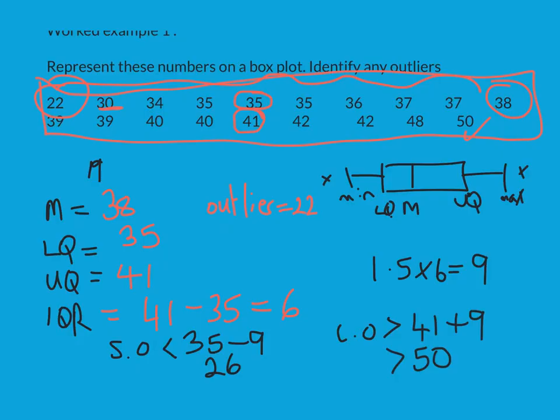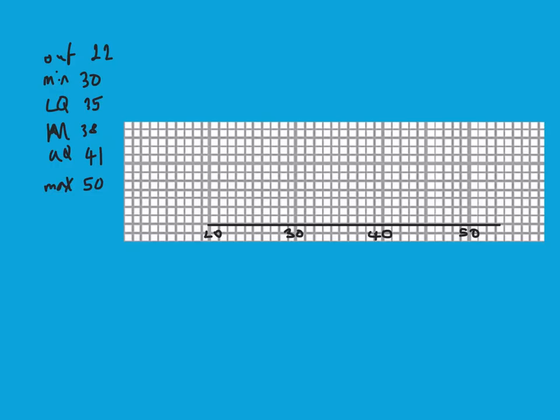So I'm about to draw my box plot, but my minimum, instead of being 22, will be 30, because 22 is an outlier. So there's my data for my box plot, here's the scale, and I'm just going to pop the data on. So 22 is just going to be there, mark it with a cross.